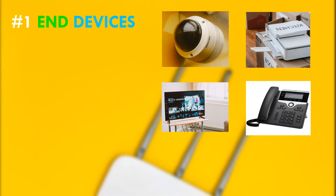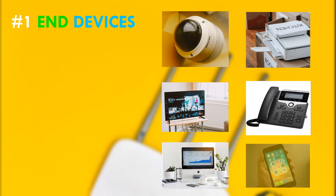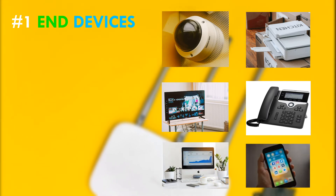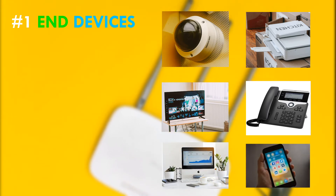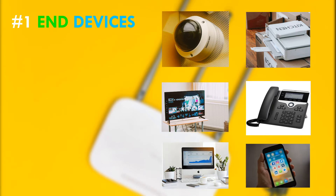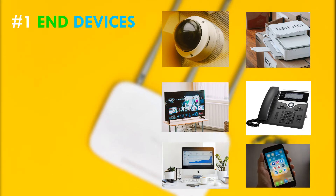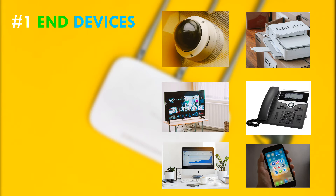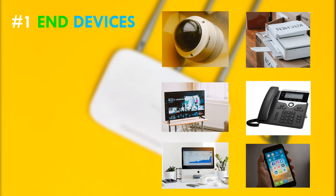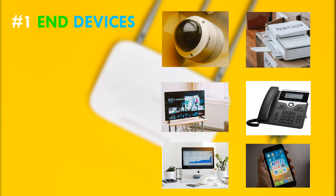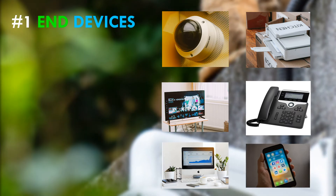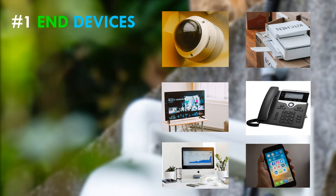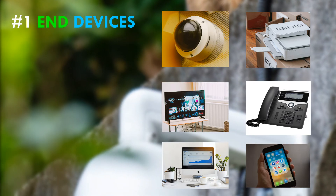End devices are either the source or destination of data transmitted over the network. In order to distinguish one end device from another, each end device on a network is identified by an address, which is called an IP address. The network devices that people directly interact with are called end devices.